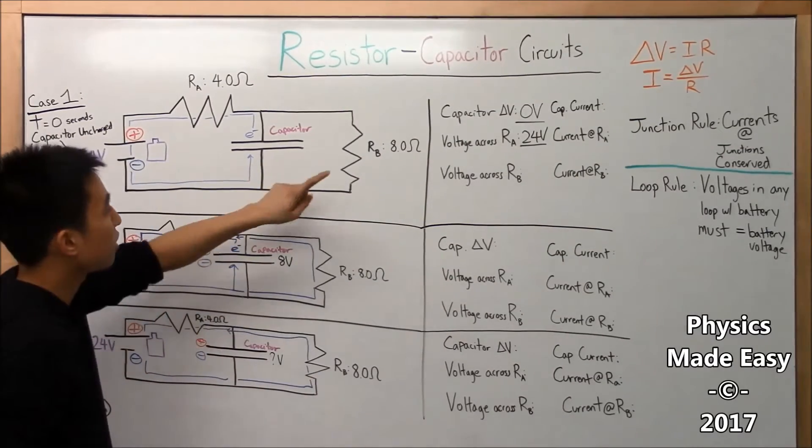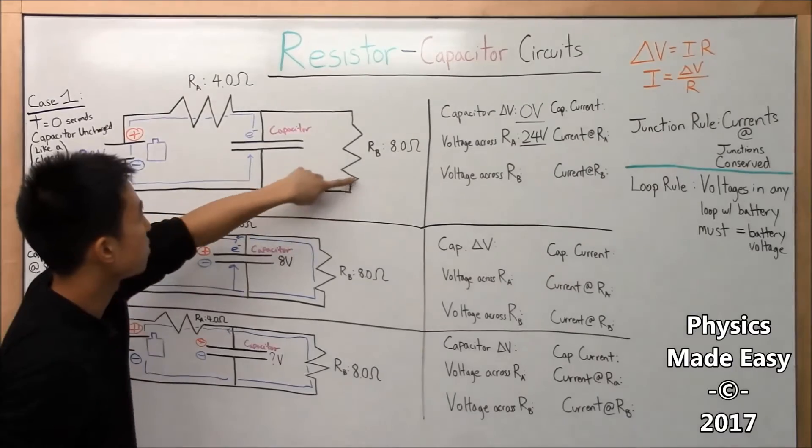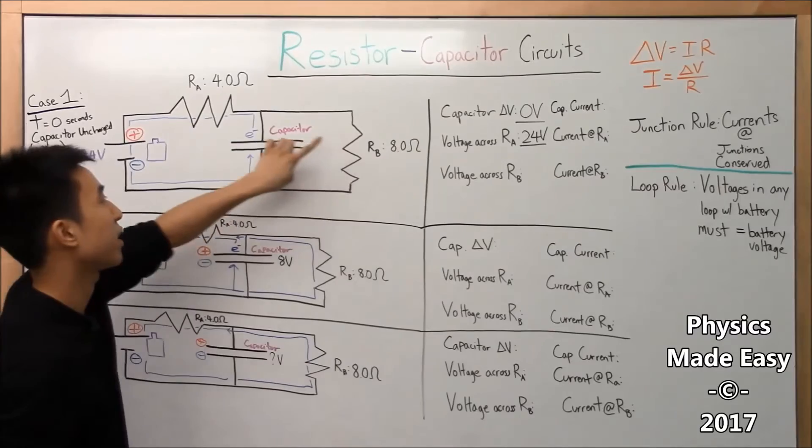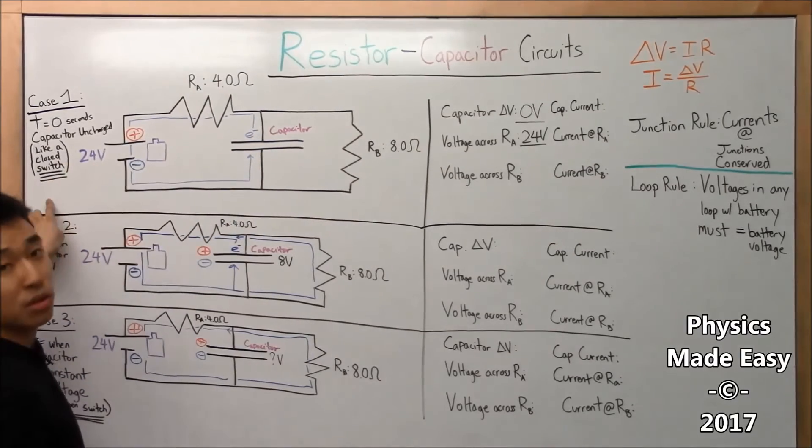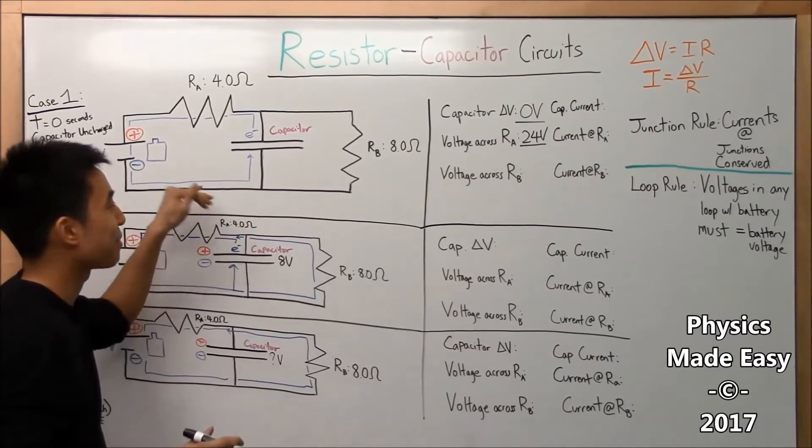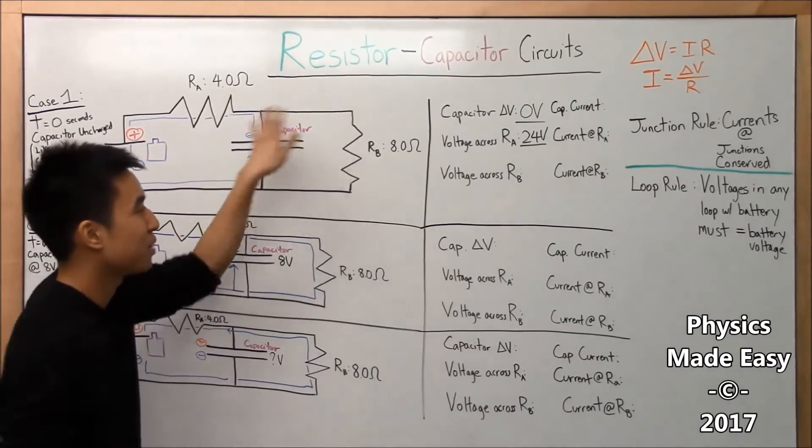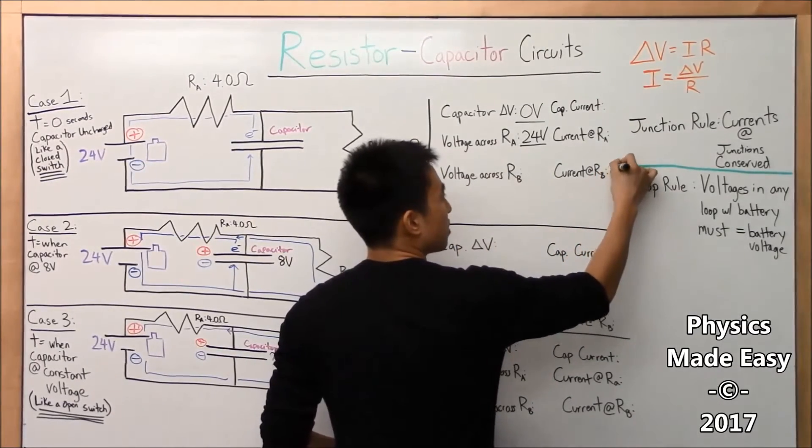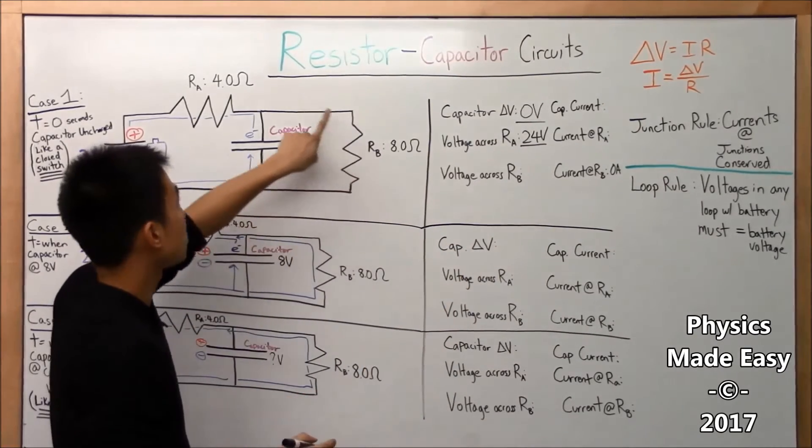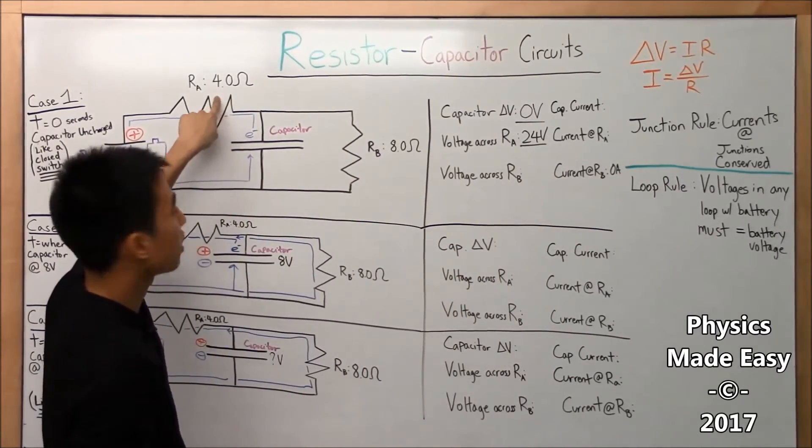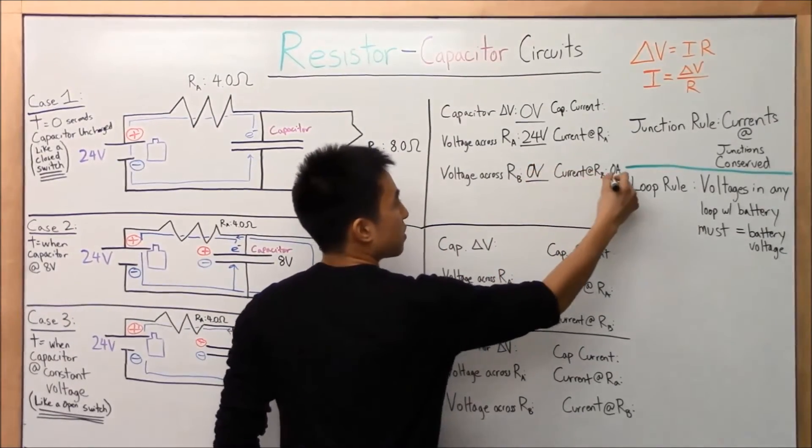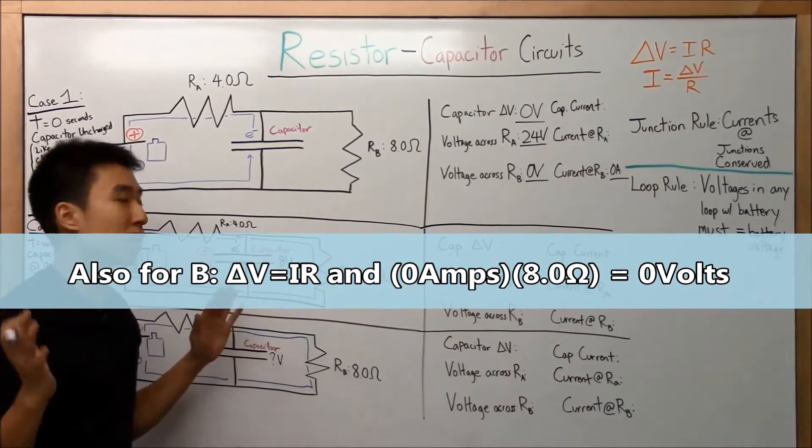And then we use loop rule again for resistor B. Because we go to this loop, there's no current going through B because we know that the capacitor is like a closed switch, infinitely, infinitely no resistance, only at this moment in time. Okay, so no current through B, so zero amps and no voltage, well zero volts, zero volts, zero amps. Any questions, feel free to ask me down below in the comments.